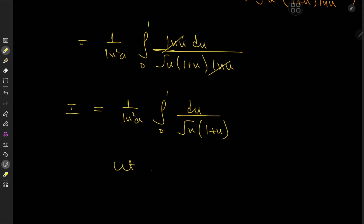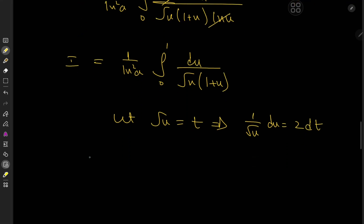So we're going to let root u equal t. And that implies that 1 over 2 root u du equals dt. And we do have a 1 over root u du term. But all we have to do is take the 2 to the other side to write this as 2 times dt. So I here is now the integral from 0 to 1. That is to say 1 over log squared a times the integral from 0 to 1. The limits are clearly not bothered by our transformation.